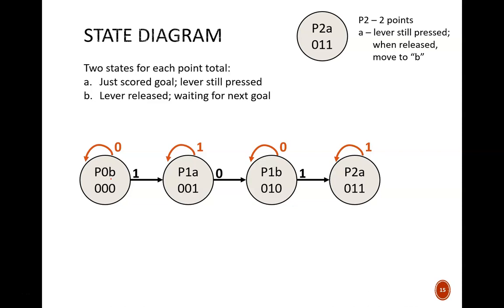As long as no goal is scored, the circuit remains at this state, indicated by this zero arrow. But when a goal is scored, indicated by this one, the circuit moves to the next state.